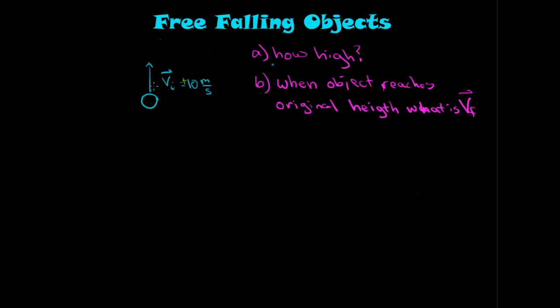Now let's think about objects that are thrown upward — they have an initial velocity going up. My first question is: how high does this object get if it's going 10 meters per second upward? And my second question is: when the object returns to its original height, what is the final velocity?